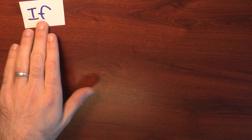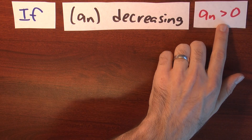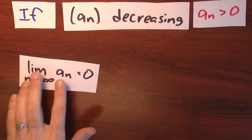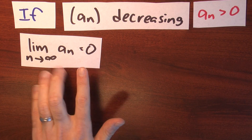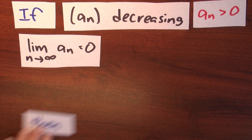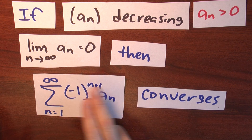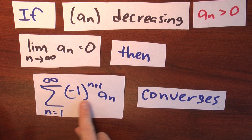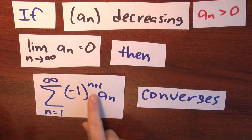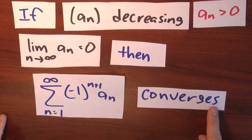The setup is as follows. Suppose we have a sequence whose terms are decreasing, all of the terms are positive, and the limit of the nth term as n goes to infinity is 0. Under these assumptions, we may conclude that the alternating series built from the sequence a_n by multiplying by (-1)^(n+1) converges.